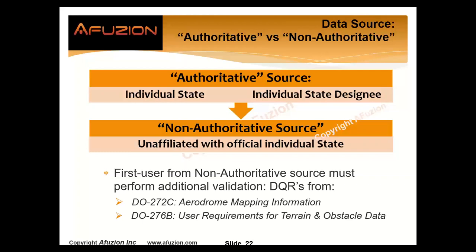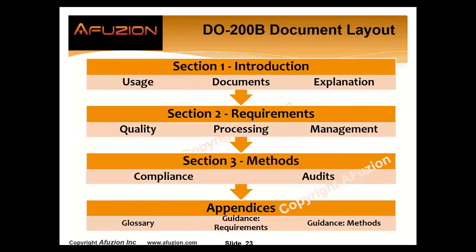First we validate, then we consider that the DQRs — data quality requirements — come from aerodrome mapping information (DO272) and user requirements for terrain and obstacle data (DO276).